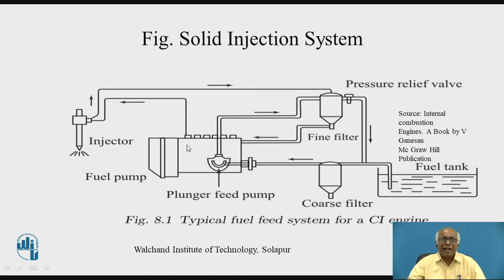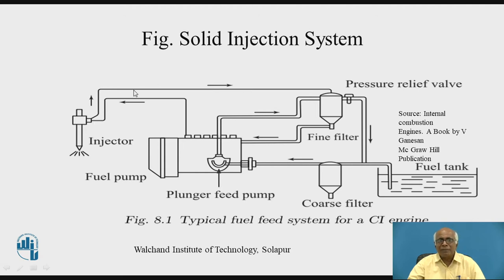From the fine filter, fuel is supplied to the fuel pump — a high-pressure pump — which increases the pressure further and supplies it to the injector. From the injector, the fuel is injected inside the combustion chamber or engine cylinder. The metered quantity is used, and the remaining quantity along with any leakage goes back through the passage to the pressure relief valve, then through the fine filter again to the fuel pump. This is how a normal solid injection system works.